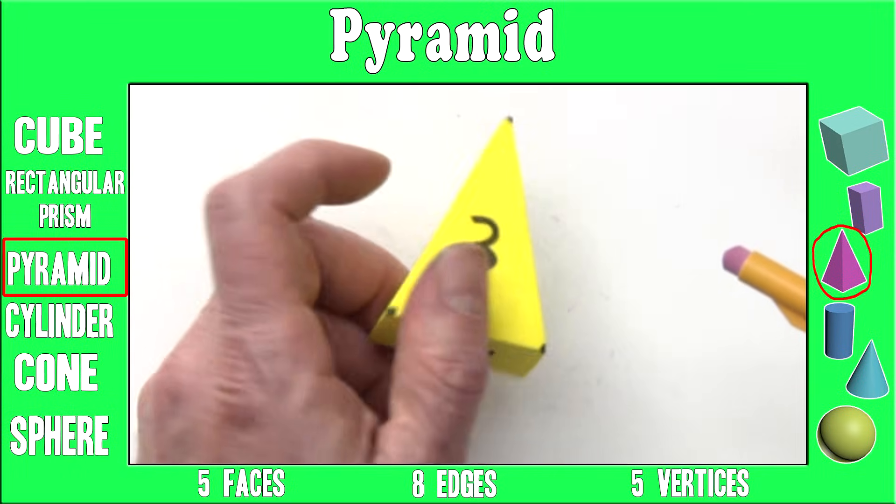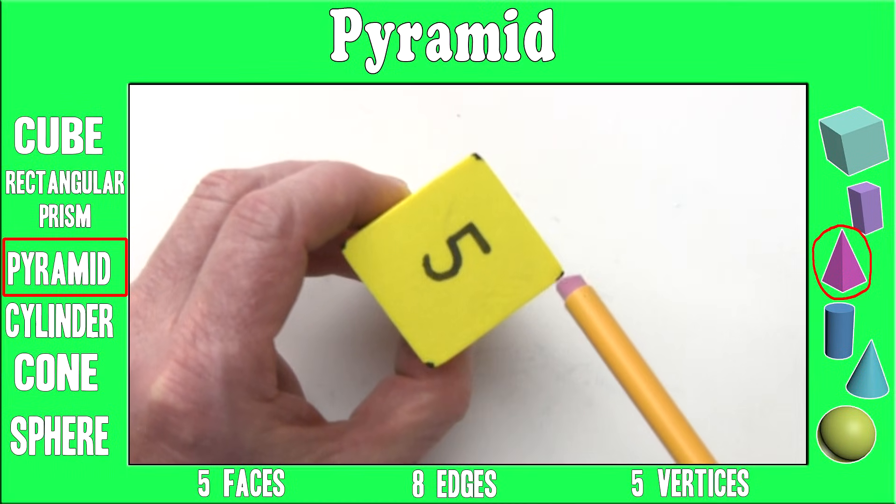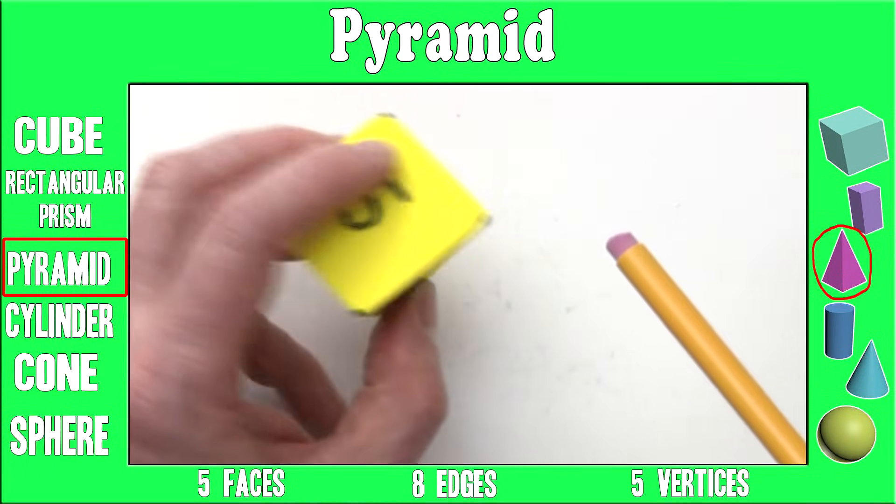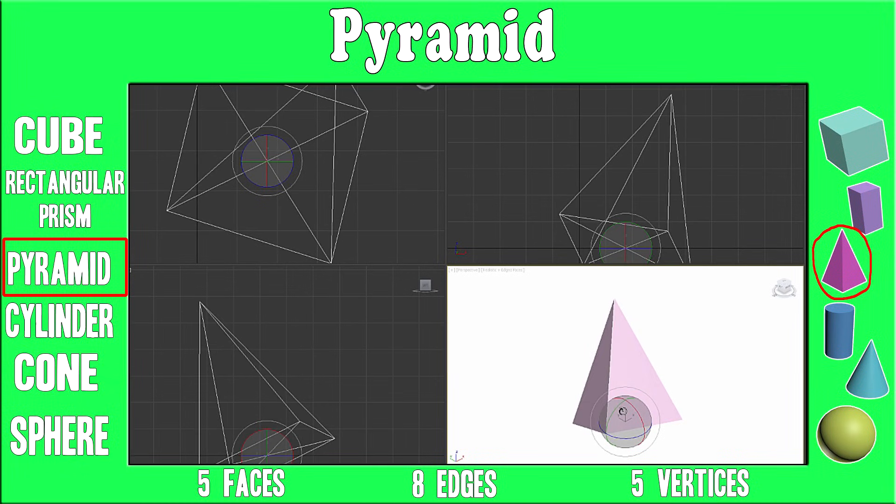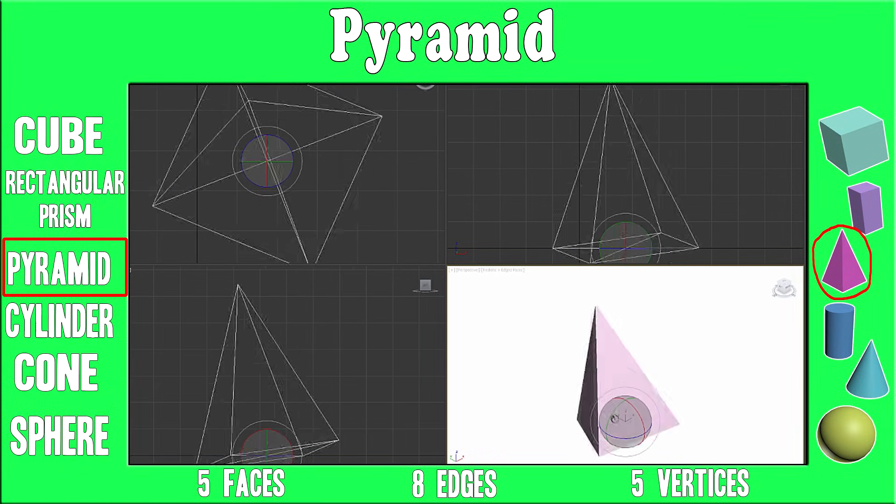A pyramid has five vertices. One, two, three, four, and five. Pyramids are the same shape as a pyramid in Egypt.